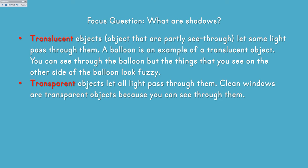Translucent objects are objects that are partly see-through. They let some light pass through them. A balloon is an example of a translucent object. You can see through the balloon, but the things that you see on the other side of the balloon look fuzzy.